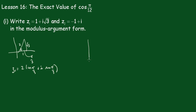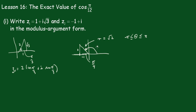For z2, I'll draw this a little better. We've got minus 1 and 1. That's what I mean by getting the diagram right — there's your minus 1 and your 1. So the modulus is equal to the square root of 2. Now here that would be 45 degrees or π/4, but remember the argument must lie between π and minus π, so the argument is 3π/4. So z2 equals root 2 times (cos(3π/4) plus i sin(3π/4)). I can't emphasize how important it is to get this diagram right so you can get the argument correct.